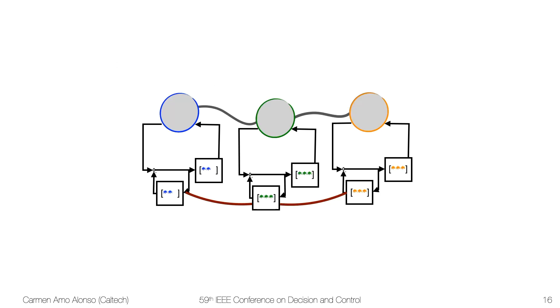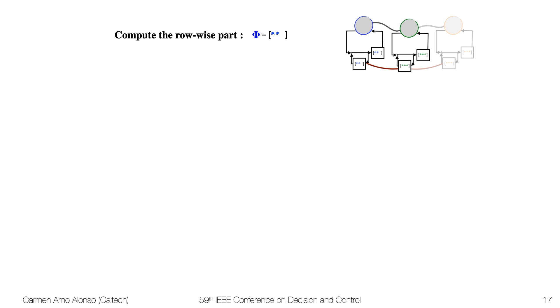Now let me illustrate what the algorithm looks like in this three node network. We are going to focus on the blue subsystem, which due to the locality constraints, only communicates with its neighbors, so we can ignore the orange subsystem.